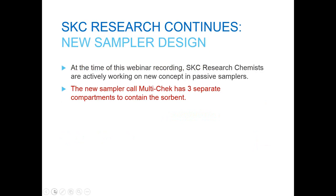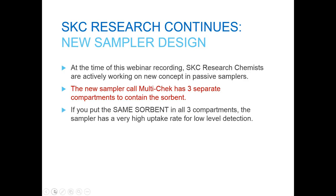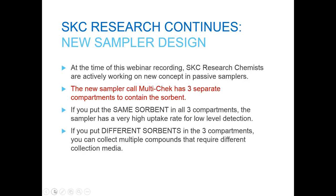SKC's commitment to research and passive sampling continues. At the time of this webinar recording, SKC chemists are actively working on a new sampler design called the Multi-Check, which has three separate compartments to contain the sorbent. If you put the same sorbent in all three compartments, you have a sampler with a very high uptake rate for low-level detection — like that needed in indoor air studies or short-term industrial hygiene sampling. If you put different sorbents in each of the three compartments, you can collect multiple compounds that require different collection media all in one device. Look for details forthcoming from SKC in the coming months.